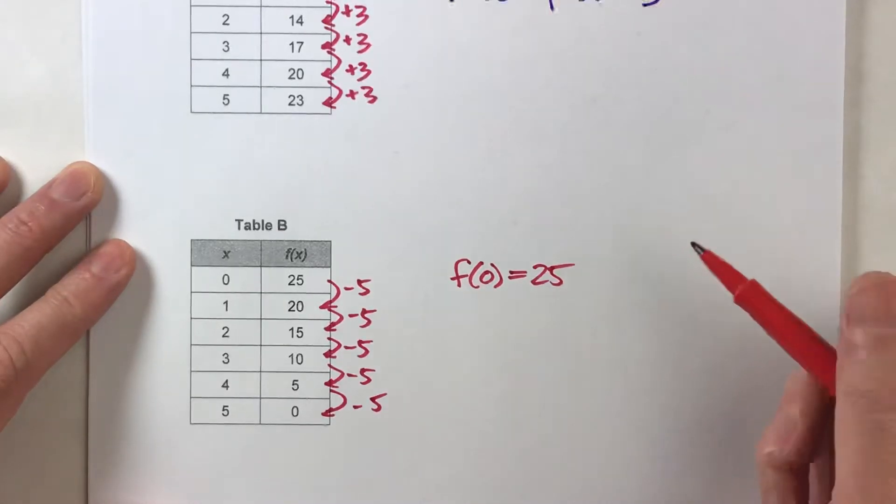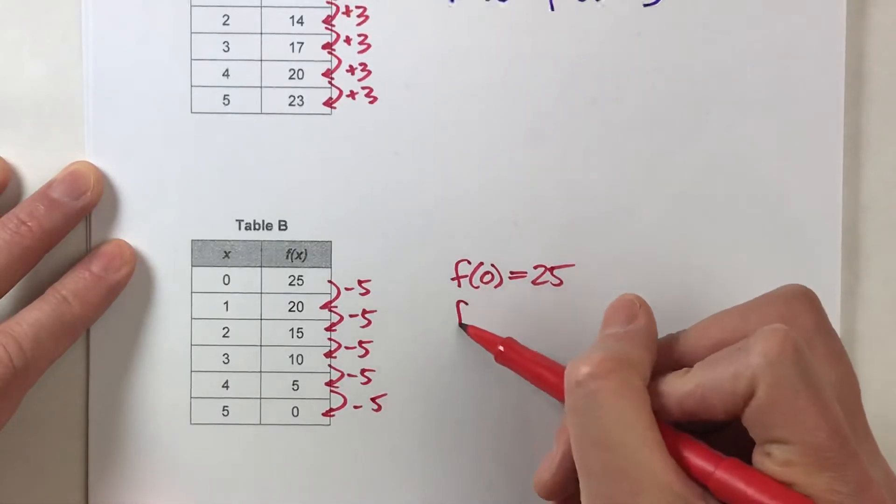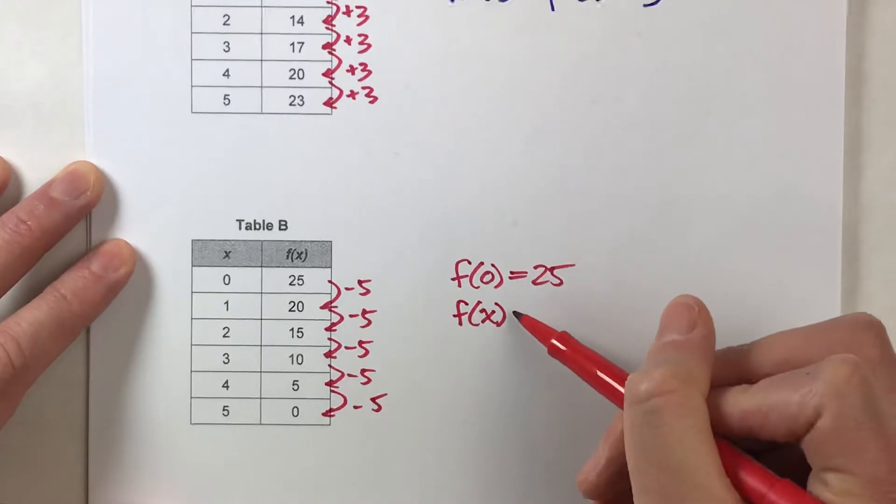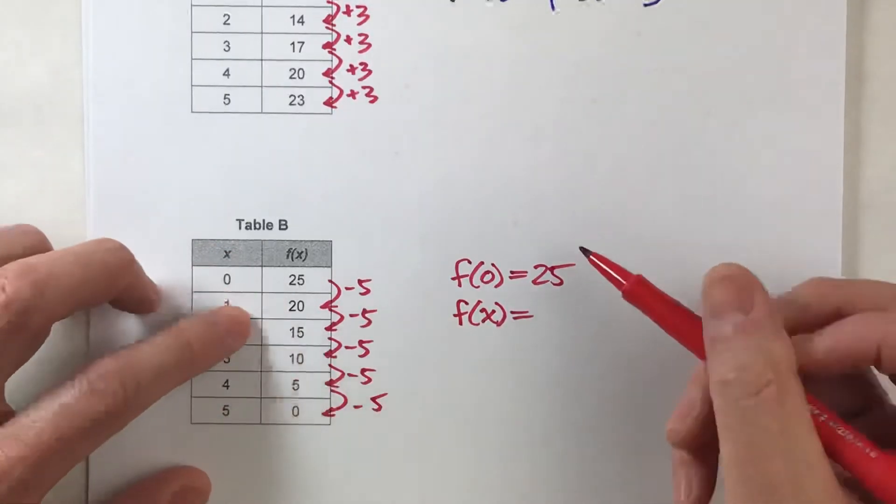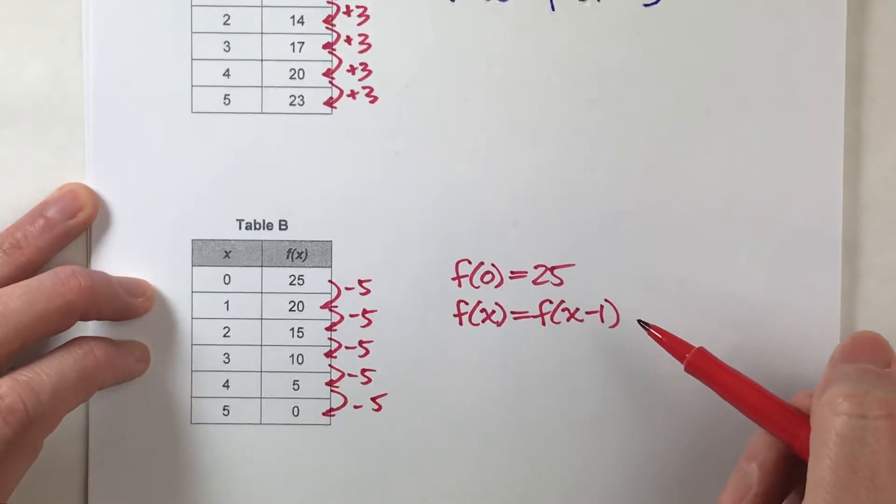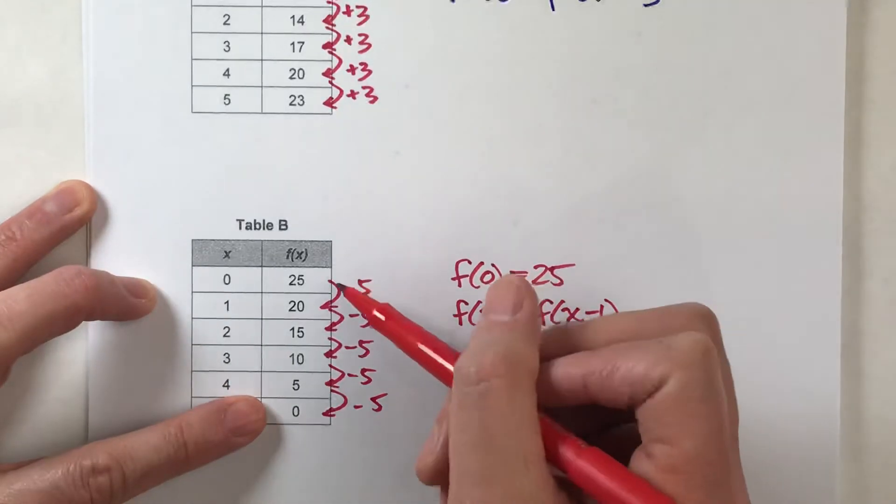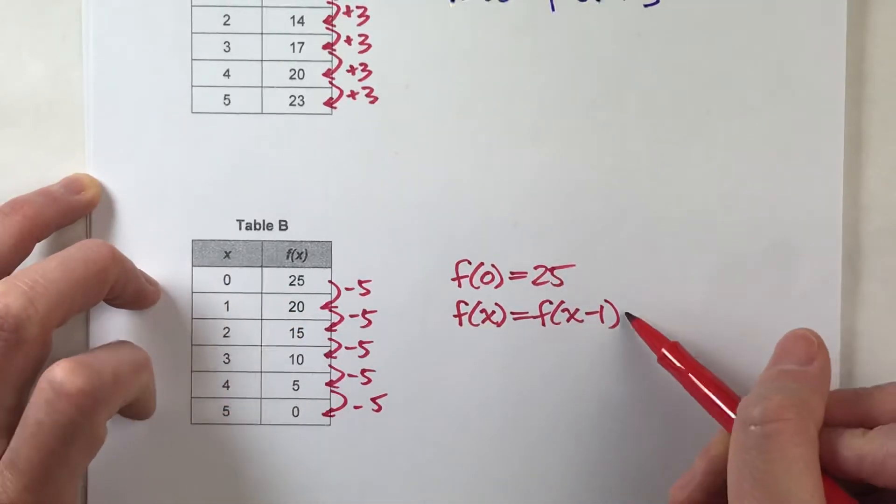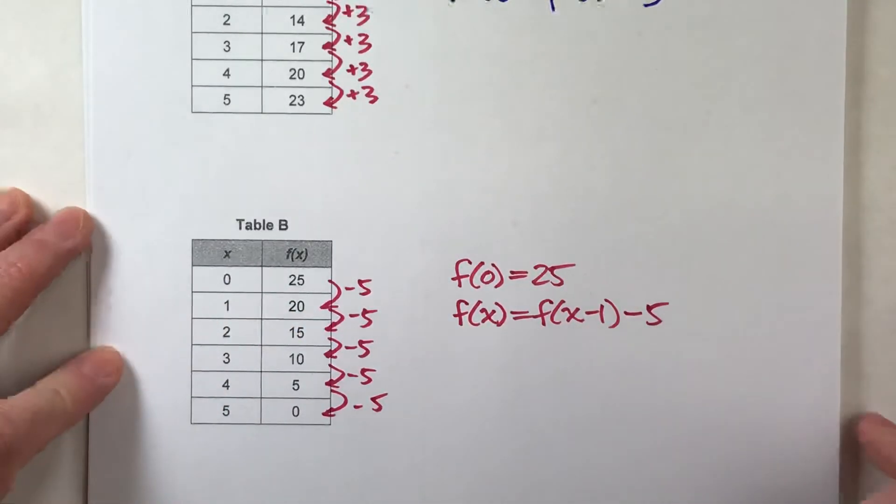Now, the second part of the equation describes the pattern. So, f of x, any value of the function is equal to the previous value, f of x minus 1, and then, what do we do to the previous value to get our current value? Well, we always subtract 5 from it. And, there's our function.